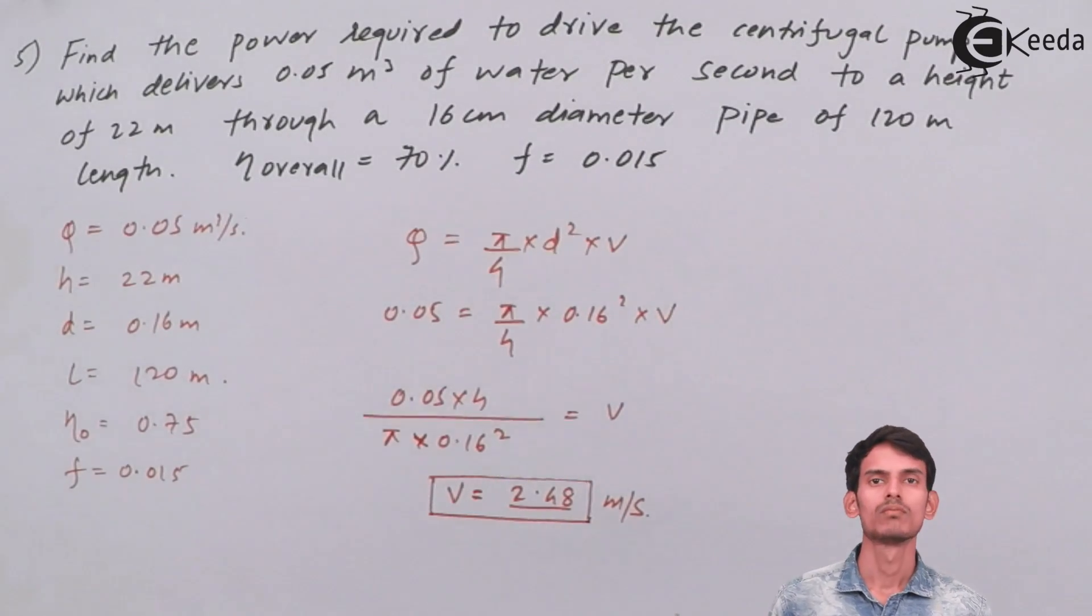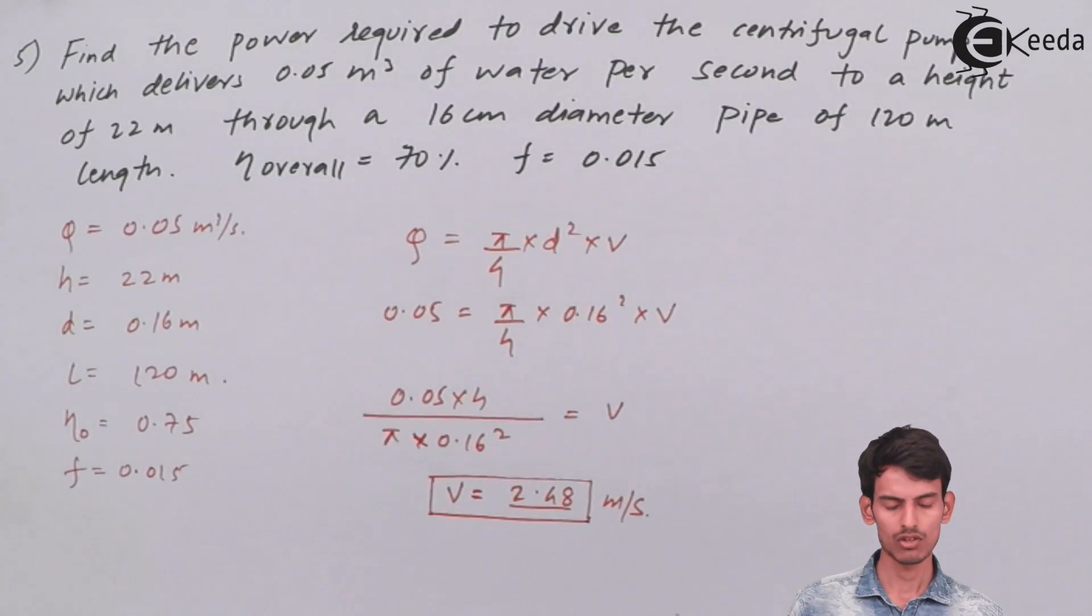After you solve this equation, you'll get the value of velocity of the flow as 2.48 meters per second. After you get the velocity, let's go on to calculate the head loss due to friction.